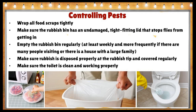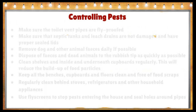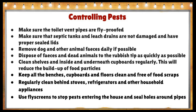Other ways to control pests: wrap all food scraps tightly, make sure the rubbish bin has an undamaged tight-fitting lid that stops flies from getting in, empty the rubbish bin regularly — at least weekly — and more frequently for large families. Make sure rubbish is disposed of properly and covered regularly. Make sure the toilet is clean, working properly, and that vent pipes are fly-proofed.